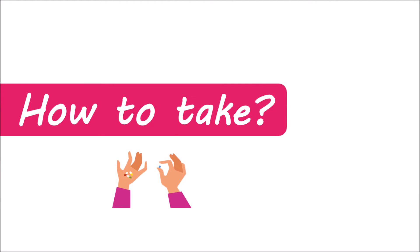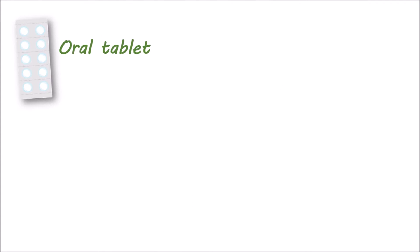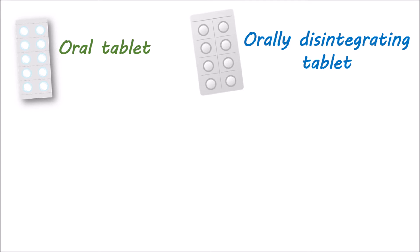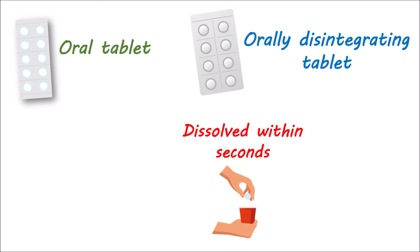Now let's see how to take risperidone. Risperidone is available in two types of tablets. The first is a normal oral tablet which disintegrates and dissolves in your stomach. Another type is an orally disintegrating tablet, also known as an mTab or mouth-dissolving tablet. Such tablets dissolve in your mouth very quickly, within a few seconds. They can be placed on the tongue where they immediately dissolve, and can be swallowed with a glass of water.